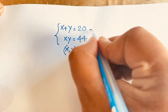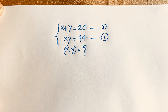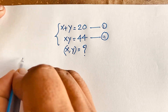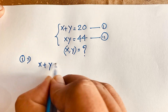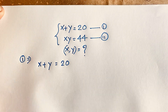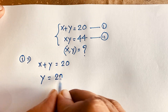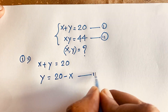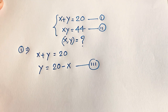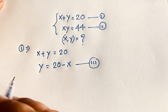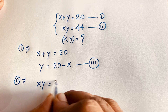This is our first equation and this is our second equation. According to the first equation, x plus y is equal to 20. We can see easily that y is equal to 20 minus x. This is our third equation. Our second equation is x times y is equal to 44.